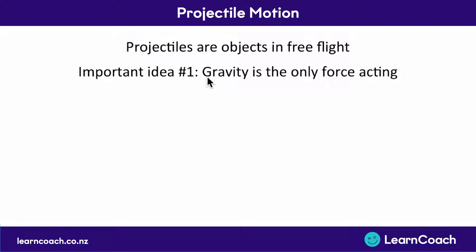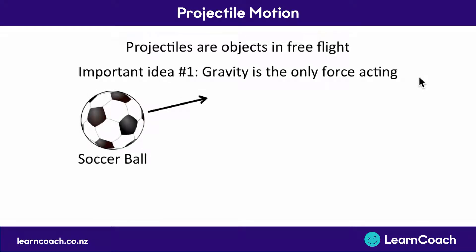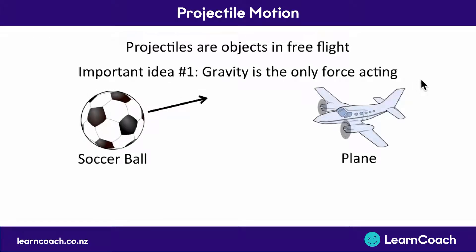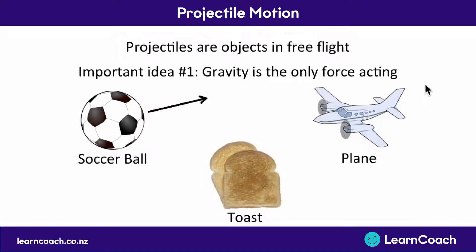The first important idea is that gravity is the only force acting on a projectile. If there are any forces apart from gravity, it's not projectile motion and don't answer it in this way. A soccer ball flying through the air would be in projectile motion because gravity is the only force acting — as soon as it leaves your foot there are no other forces acting apart from gravity.